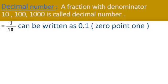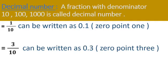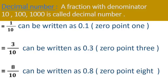Read this: 0.1. Next example: 3 by 10 - this is also a decimal number, we can write it as 0.3. One more example: 8 by 10 - here 8 is the numerator, 10 is the denominator. It can be written as 0.8. This is the decimal number 0.8. If a point is there, we call it a decimal number.